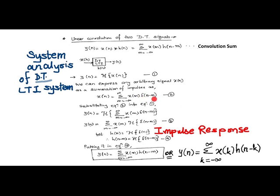When we substitute this form of x of n in equation 1 and simplify, it results into output y of n as x of n multiplied with a function of delta of n minus k. The meaning of applying an impulse function as input to a discrete time LTI system is that the output given by the system is termed as an impulse response h of n.